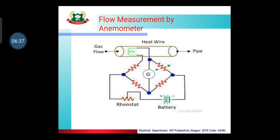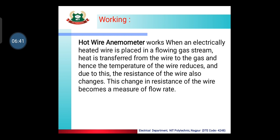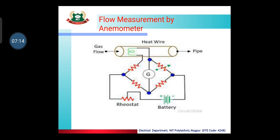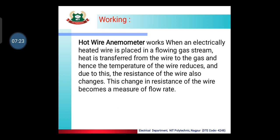The hot wire anemometer works when an electrically heated wire is placed in a flowing gas stream. Heat is transferred from the wire to the gas, and hence the temperature of the wire reduces. Due to this, the resistance of the wire also changes. This change in resistance of the wire becomes a measure of the flow rate. So when heat is transferred from the wire to the gas, the wire temperature decreases, the wire resistance changes, and this change in resistance of the wire becomes a measure of the flow rate.